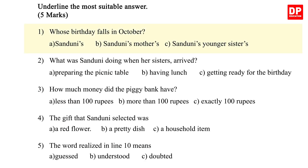Now that we have read the passage, let's read the questions and figure out the correct answers. The correct answer to question 1 is B — Sandini's mother's. Question 2: What was Sandini doing when her sister arrived? A. Preparing the picnic table. B. Having lunch. C. Getting ready for the birthday. The correct answer is A — preparing the picnic table.